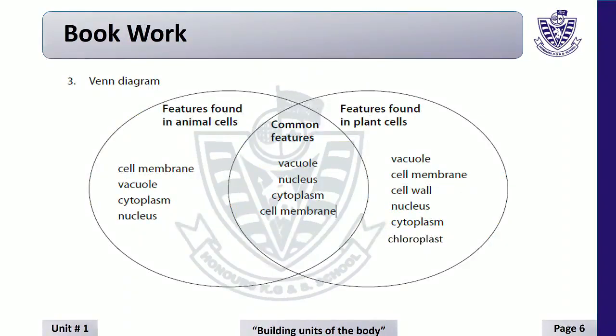Students, here is a Venn diagram on page number six. On one side of the diagram are the features of the animal cell, on the other side are the features of the plant cell, and in between you have to write the common features of both plant and animal cell.